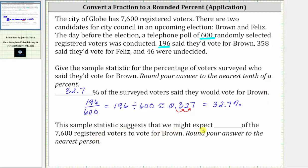For the second part, this sample statistic suggests that we might expect how many of the 7,600 registered voters to vote for Brown. We would expect approximately 32.7% of the 7,600 voters to vote for Brown. But if we use this rounded percent, we will have an error. So let's use the exact fraction 196 over 600 and multiply by 7,600. To find the fraction of a number, we take the fraction and multiply by that number, giving us 196 over 600 times 7,600.